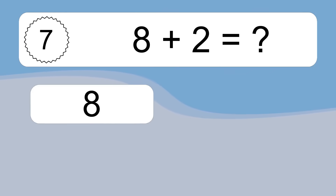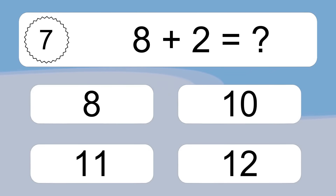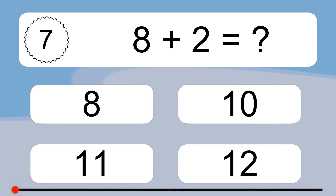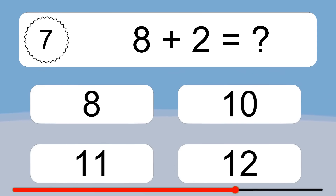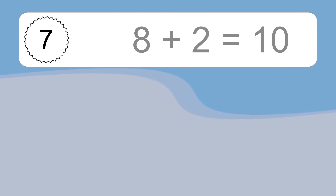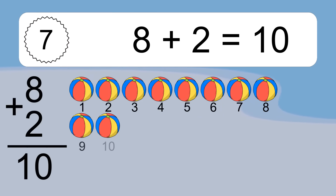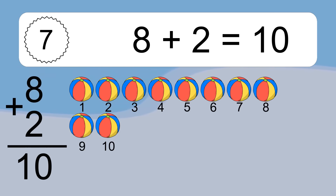8 plus 2 equals what? 8 plus 2 equals 10. Let's count it. 1, 2, 3, 4, 5, 6, 7, 8, 9, 10.